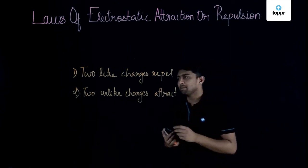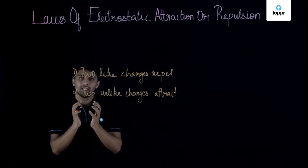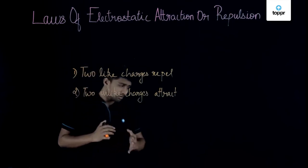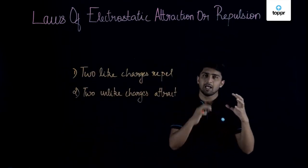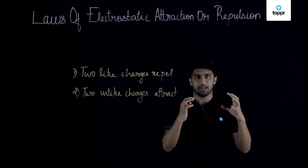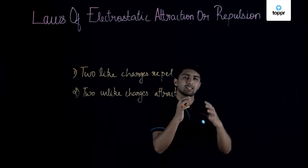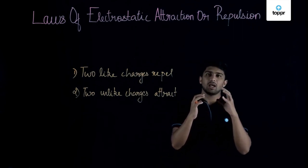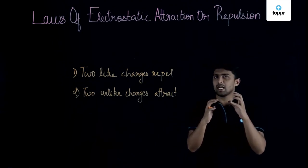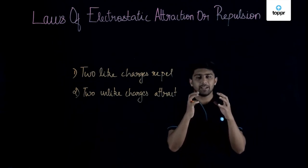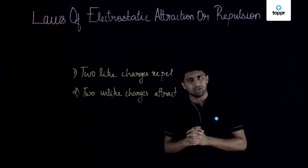At the same time, if two unlike charges are brought nearby, then they will attract each other. For example, if we have a net positive atom and a net negative atom, the negatively charged atom will tend to attract the positively charged atom, and vice versa. So both atoms will attract each other.